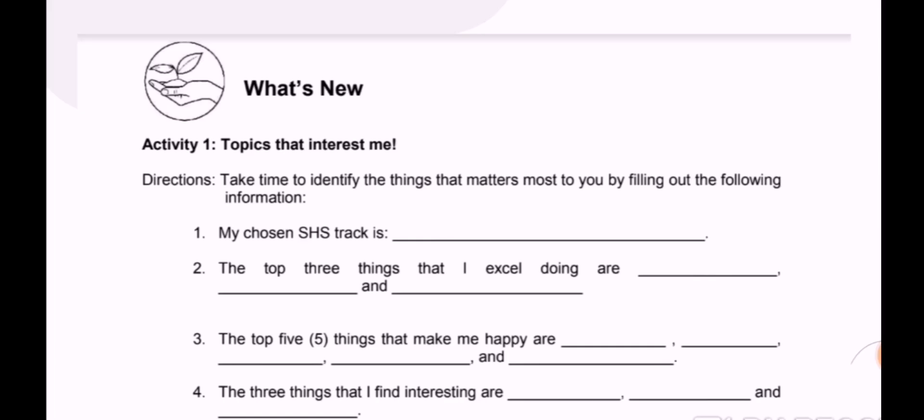What are the top five things that make you happy? This could be non-academic activities, personal activities, hobbies, aspirations—anything you want to do. The bottom line is these things make you happy.